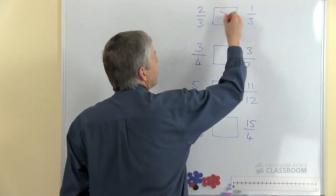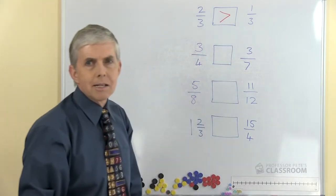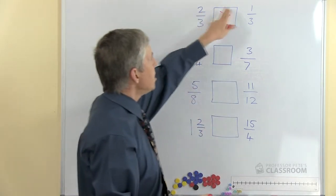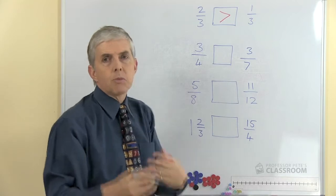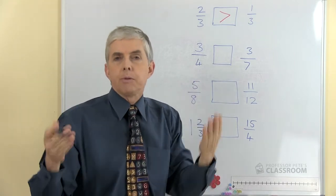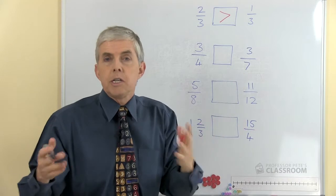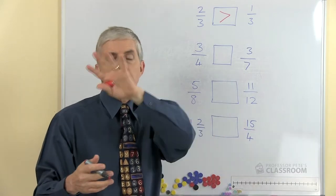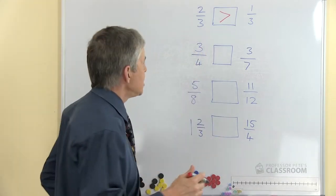Basically if the number on the bottom or the denominator is the same, all we need to do is compare the top number because we're comparing, as we say, apples with apples. Thirds and thirds, a third is the same size as another third, so if we have two here and one here that's an easy one.